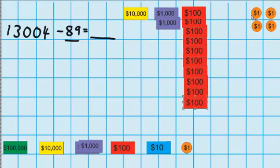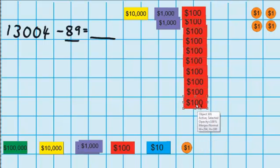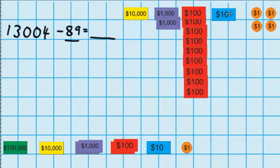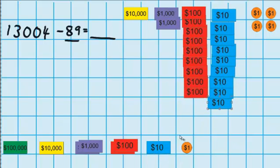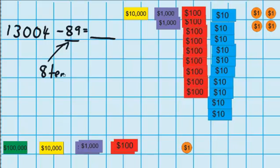Now you can see I'm still not able to take away that 89, so what I'm going to have to do is swap one of these $100 notes for 10 $10 notes, because I know that 10 $10 notes is exactly the same as one $100 note. So I move that down there and put 10 of these up here — 1 through 10. Now I do have enough tens to take away those 8 tens, but I don't have enough ones to take away these 9 ones. So I'm going to break up one of these $10 notes for 10 $1 coins.